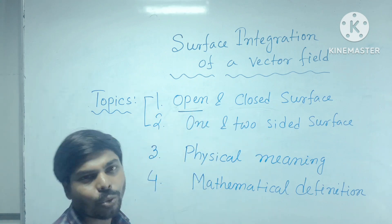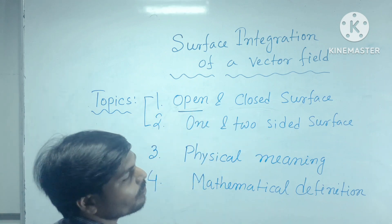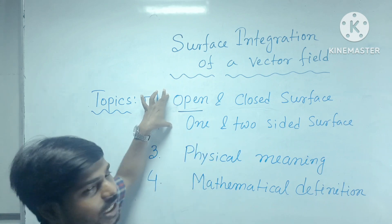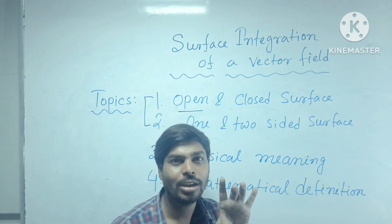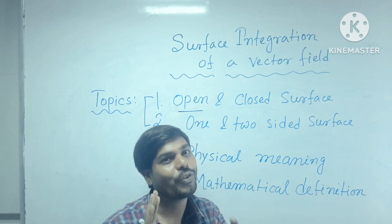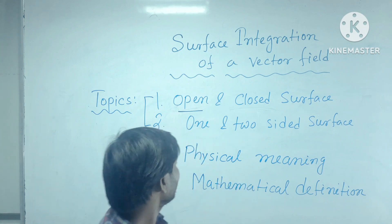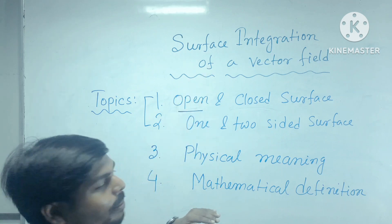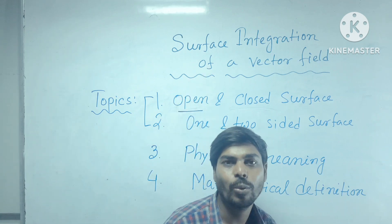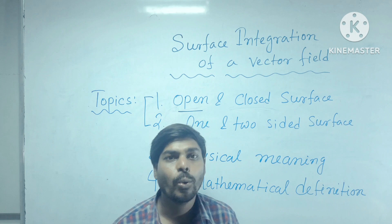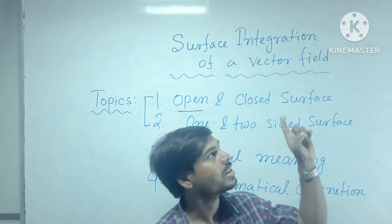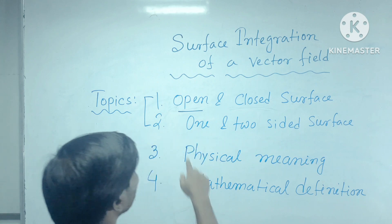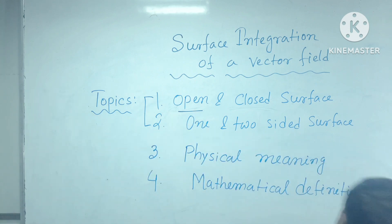First, what is the open surface? What is the closed surface? What do you mean by the one and two-sided surface? Because these two concepts are very essential to understand the problems. Third, I will discuss what is the meaning of surface integration. And fourth, what is the mathematical definition — the working formula for surface integration. So let's start with what do you mean by the open and closed surface.